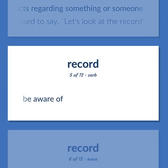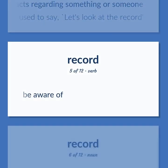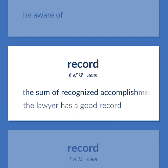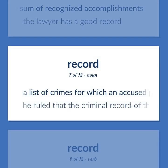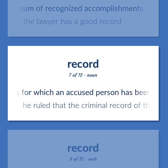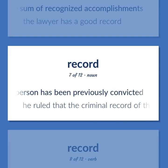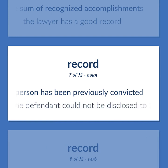Be aware of. The sum of recognized accomplishments. The lawyer has a good record. A list of crimes for which an accused person has been previously convicted. He ruled that the criminal record of the defendant could not be disclosed to the court.